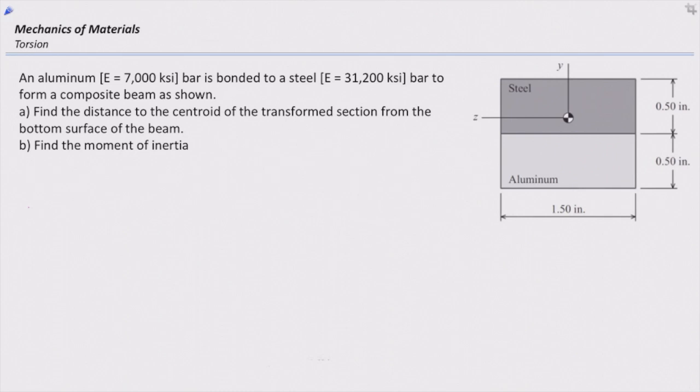I'm asking you to transform this into a section fully made of aluminum. What does it mean? We need to increase the width and replace that. It would be like a T-shaped section with increased width. Determine the centroid of that section.